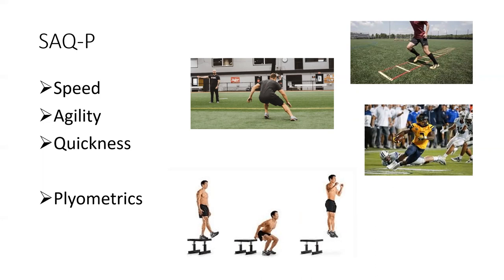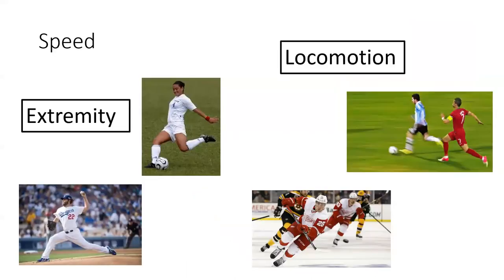Think of this image of a drop jump — it's a rapid eccentric loading into a rapid concentric contraction. That transition phase is a key point. Plyometric activities fall into things like sprinting, jumping, and changing directions — all have this similar plyometric activity.